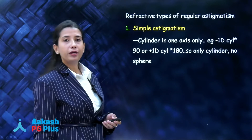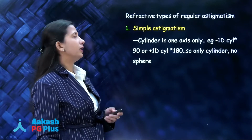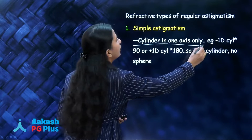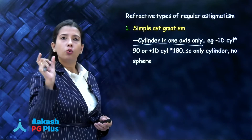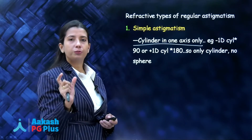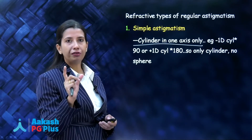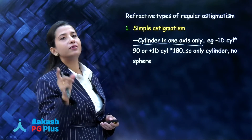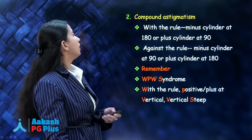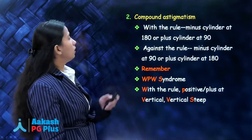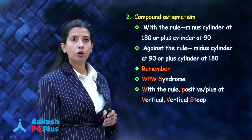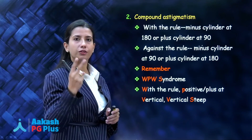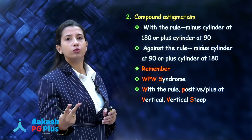In simple astigmatism, you have cylinder in one axis only. Looking at the prescription, if there is no spherical correction — only cylinder at one axis — then it is simple astigmatism. In compound astigmatism, you also have two sub-types: with the rule and against the rule.